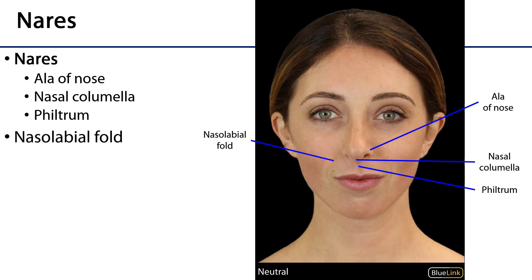Moving down to the nose: surrounding the nares, kind of going over them like a roof, is the ala of the nose. Ala means wing — it's also Daryl Hannah's character in the 1986 movie Clan of the Cave Bear. So the ala of the nose is the wing of the nose, going over and surrounding the nostril.